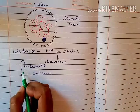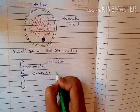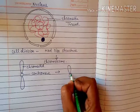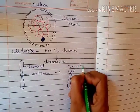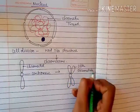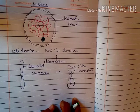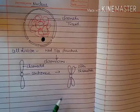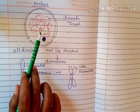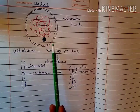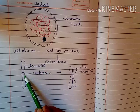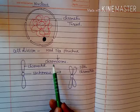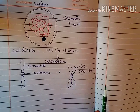During cell division, the chromatin copies itself and makes sister chromatids. Because the genetic material from the parent cell must transfer into the new daughter cell, it is necessary to copy the chromatin thread into a new set. The chromatin thread condenses itself, detangles, and makes a rod-like structure known as a chromosome, and that chromosome has all the necessary information and gets transferred into the new cell.